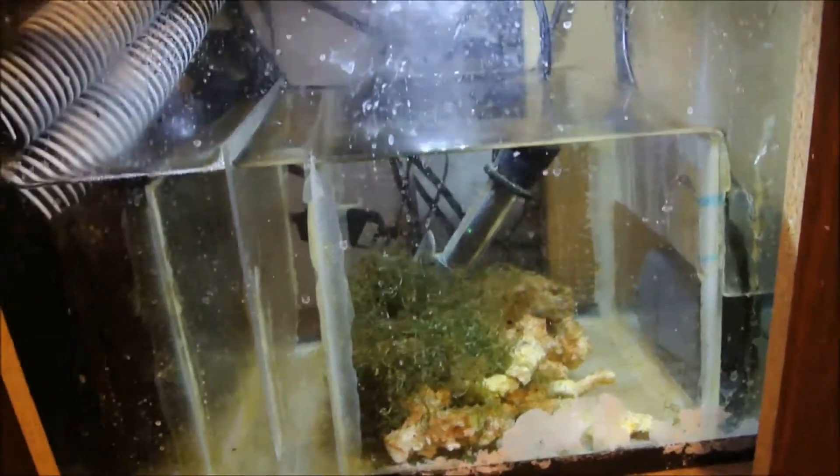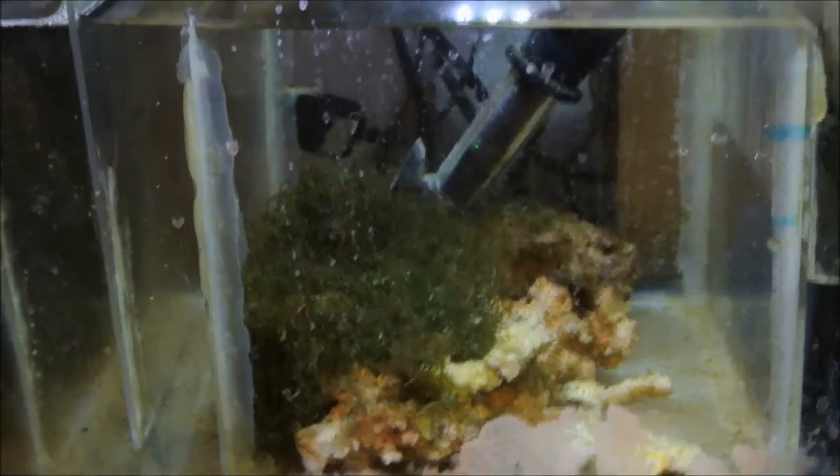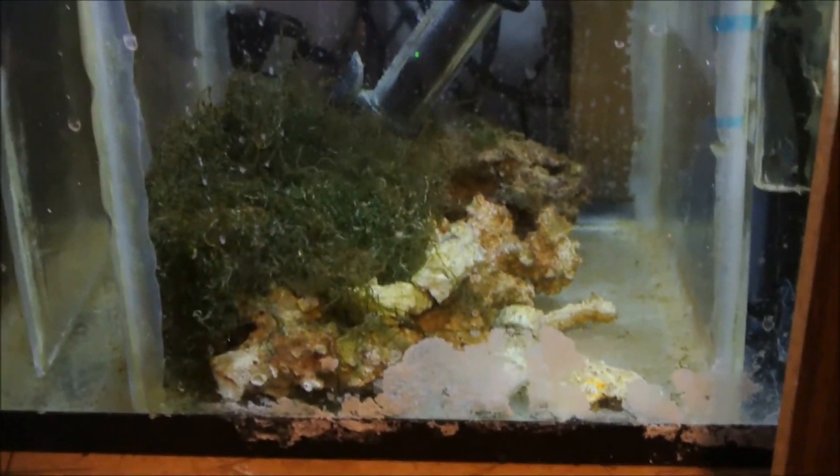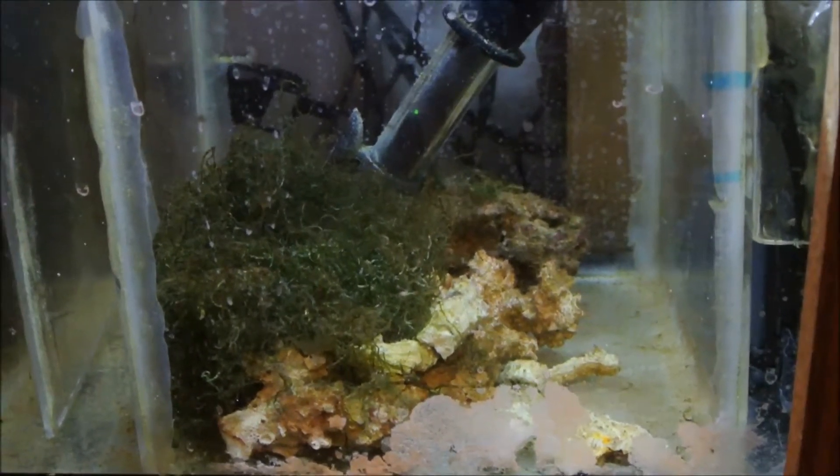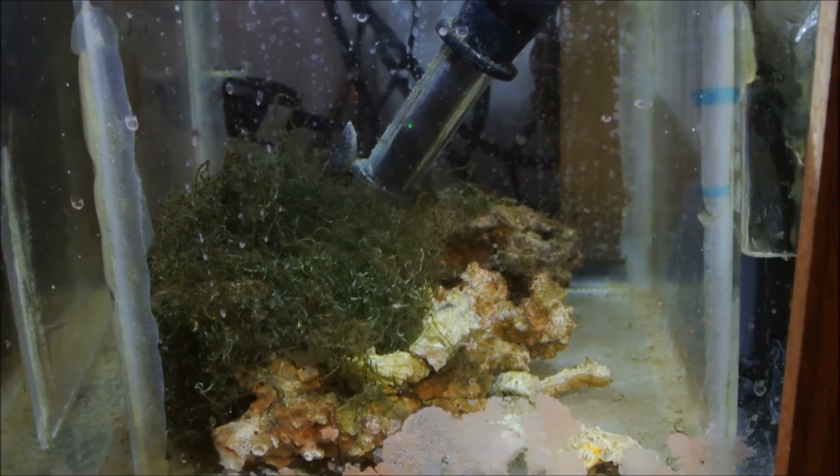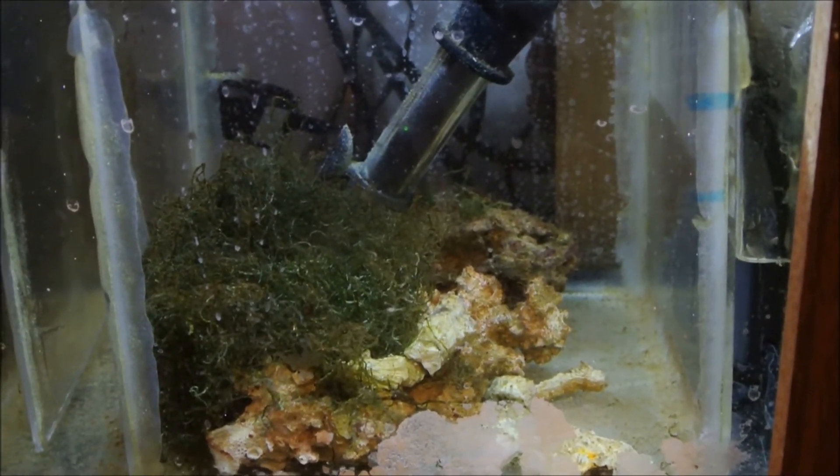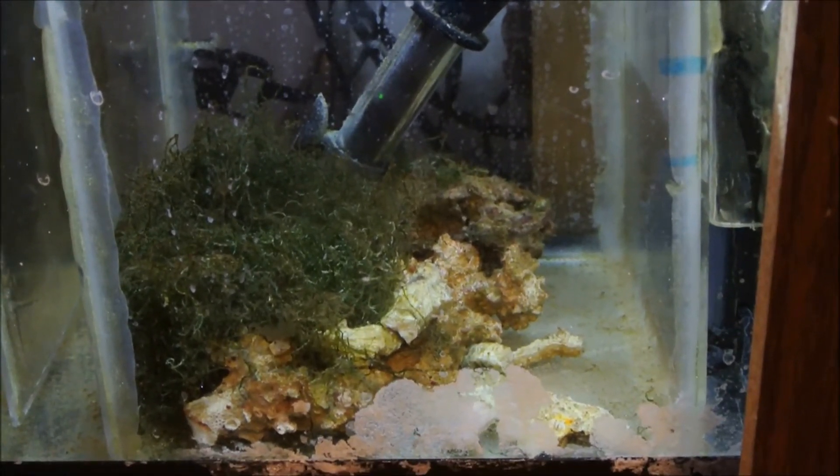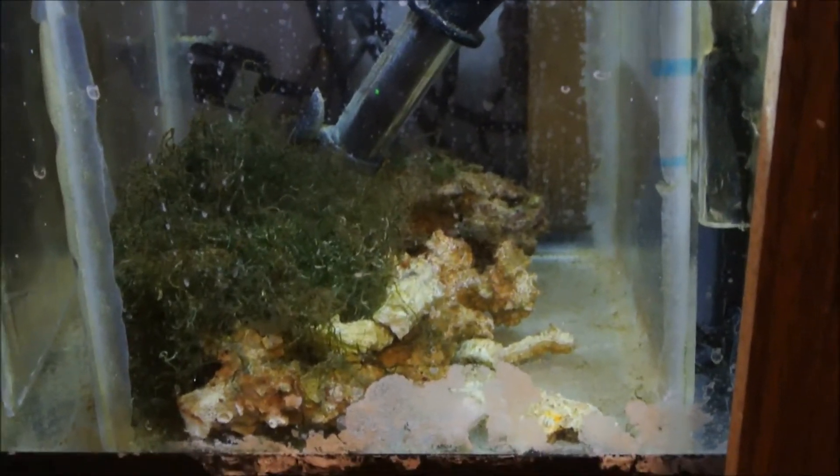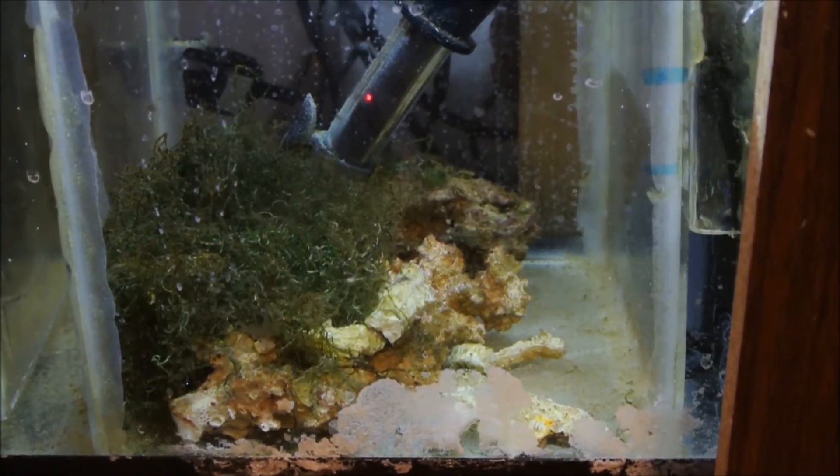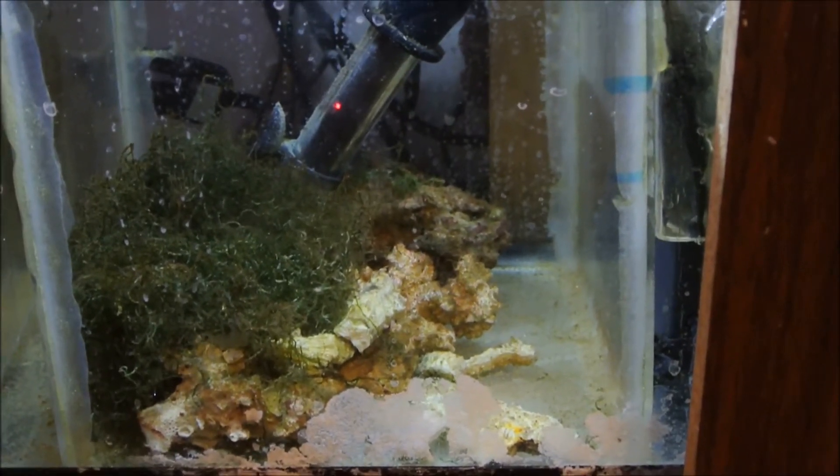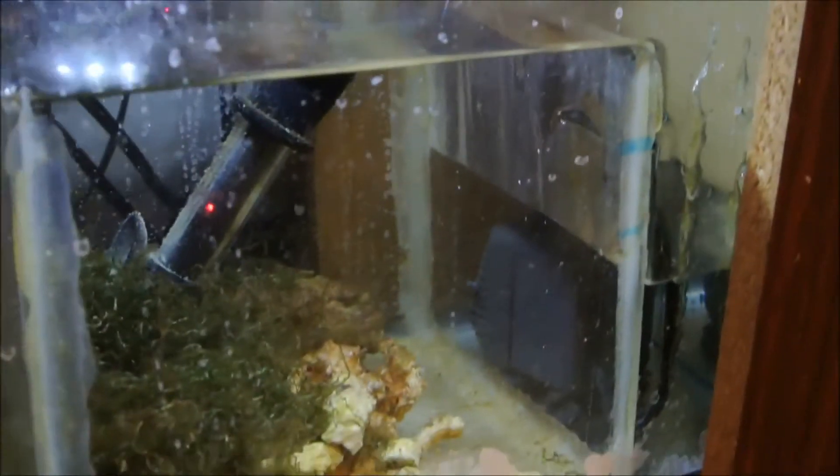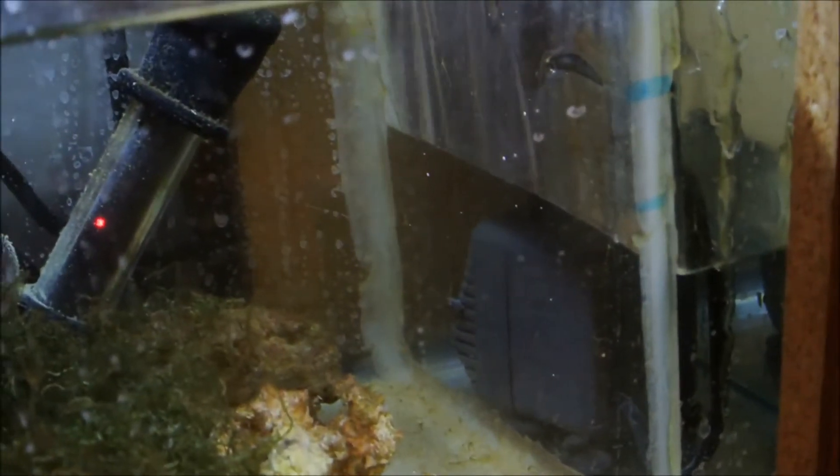My next chamber here is my refugium where I have gone bare bottom. I just have my Chaeto, my Live Rock Rubble, and my Heater. If you go on forums, YouTube, there's a lot of people that talk about Miracle Mud, Live Sand, or a bare bottom refugium. I decided to go to the bare bottom refugium because I heard, and then I read, that with Live Sand or even Miracle Mud, it could become a detritus trap. I don't want that. Plus, it's going to be easier to clean. So, I am trying the bare bottom method.